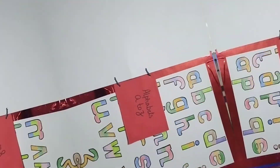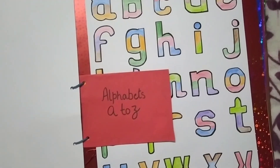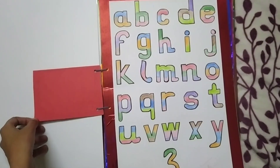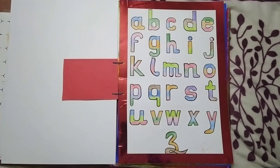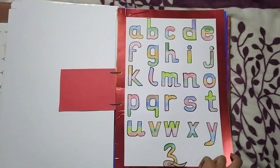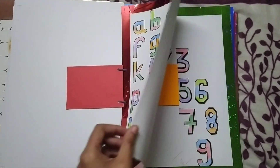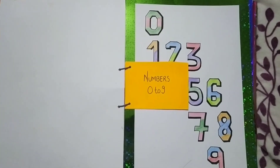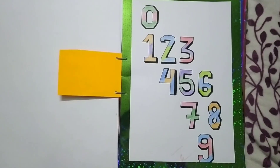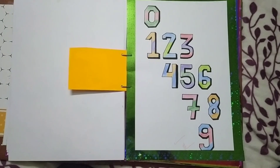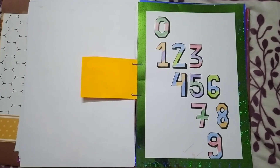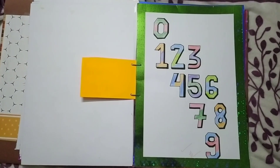Then we have alphabets from A to Z again, written in free handwriting. This sheet shows the alphabets written in free handwriting from A to Z. Then the next sheet is about numbers from 0 to 9, written in block letters. These numbers have been presented in a beautiful manner and I hope you all like it.